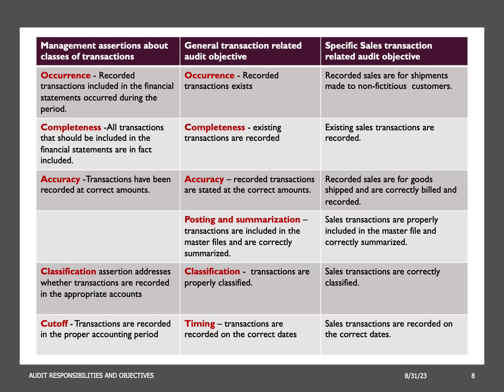The occurrence assertion is one of the key assertions made by management regarding the transactions and events presented in the financial statements. It asserts that the recorded transactions and events actually occurred and are relevant to the company's operations during the specified period. The auditor's objective is to gather sufficient and appropriate audit evidence that supports the occurrence of transactions and events, ensuring that all recorded transactions are real and not fabricated. For example, a company that sells electronic devices records sales transactions when products are sold to customers; the occurrence assertion for revenue involves confirming that the sales transactions have indeed taken place.